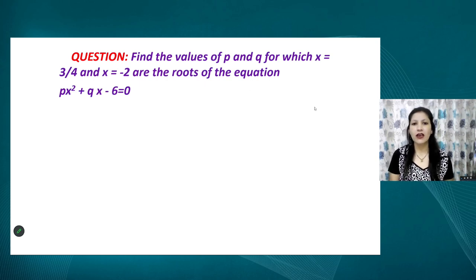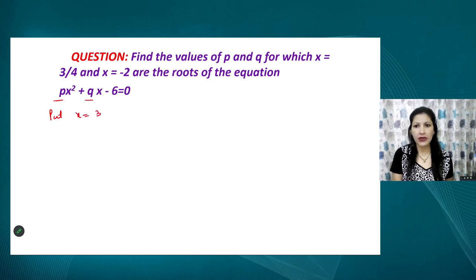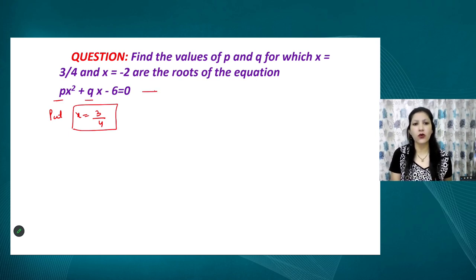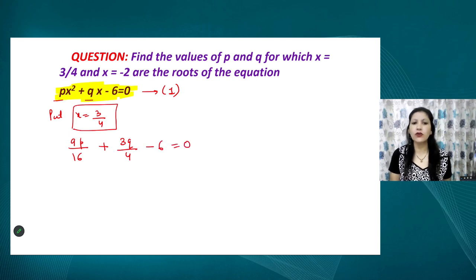Next question: find the values of p and q. We have two unknown constants, p and q, and we need to find their values for which x = 3/4 and x = −2 are roots of the given equation. Since a root satisfies the equation, substituting x = 3/4 gives: 9p/16 + 3q/4 − 6 = 0. Taking 16 as LCM, we get the first equation: 9p + 12q − 96 = 0.